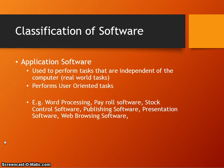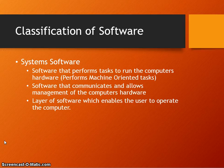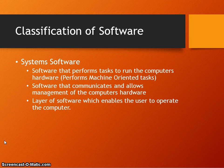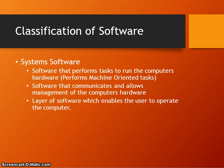The other category of software is system software. System software performs tasks to run the computer's hardware and carries out machine-oriented tasks. This kind of software acts as a layer that enables the user to operate the computer. System software comes in many different categories: an operating system, library programs, language translators, and utility programs.